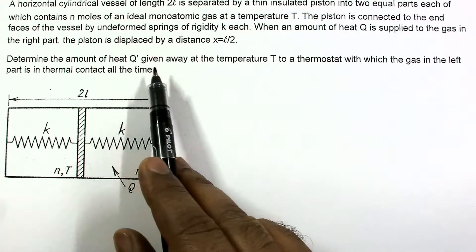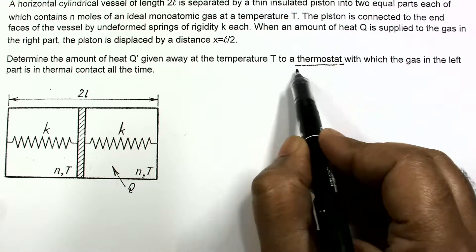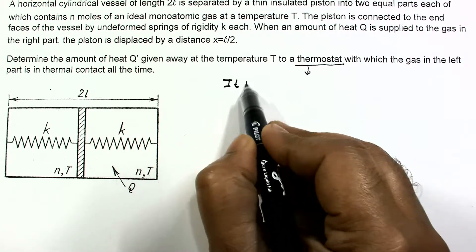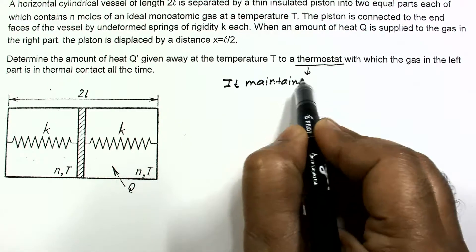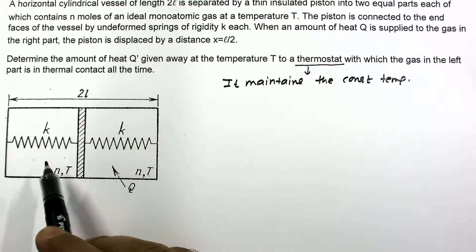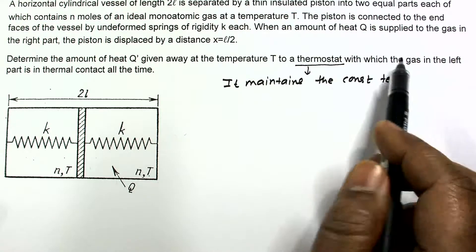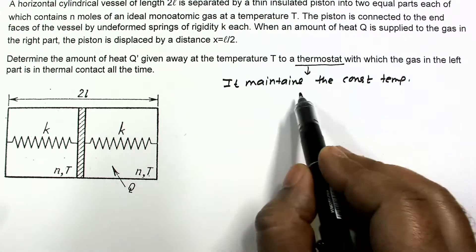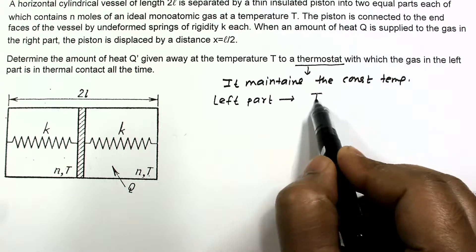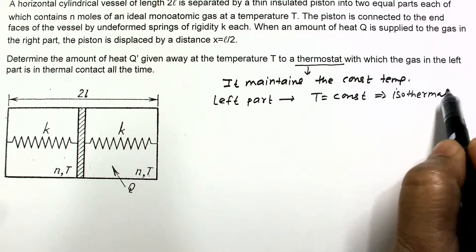Determine the amount of heat Q dash given away at temperature T to a thermostat. A thermostat maintains constant pressure and constant temperature. So in this left chamber, the pressure and temperature will remain constant and equal to T. The gas in the left part is in thermal contact with the thermostat all the time, so it maintains constant temperature — meaning the left part undergoes an isothermal process.